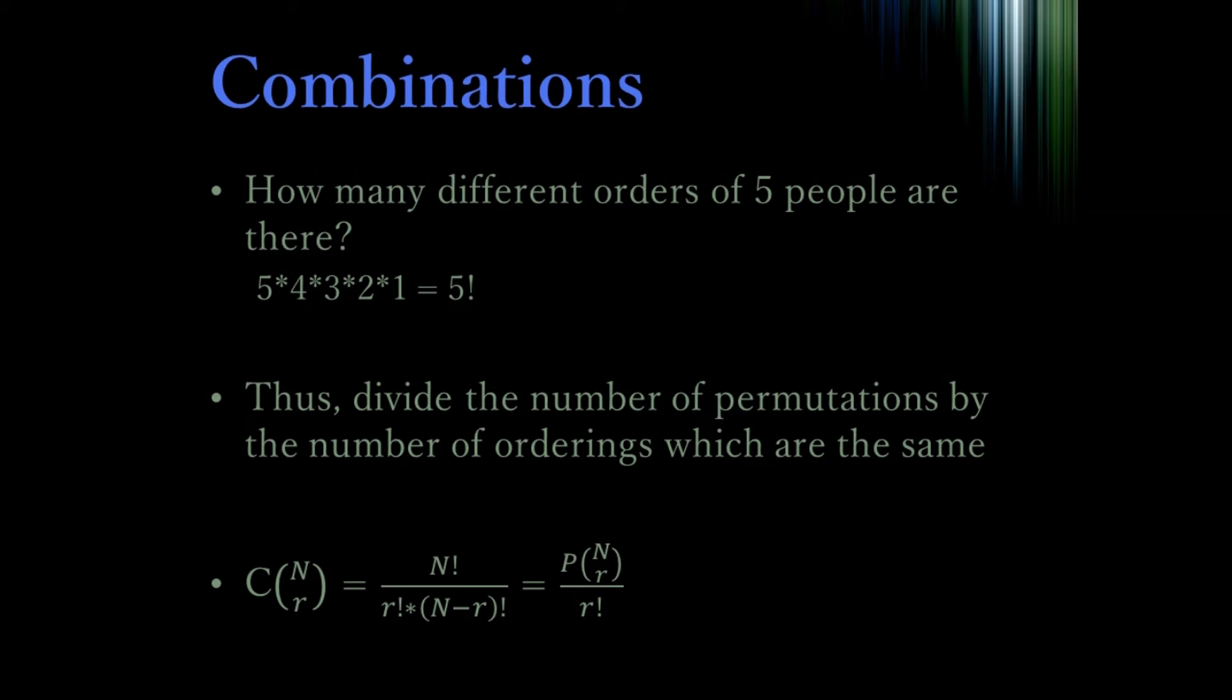So if we want to know how many different combinations we can have, we simply take the number of permutations and divide it by the number of orderings, which gives us n factorial divided by r factorial multiplied by n minus r factorial.